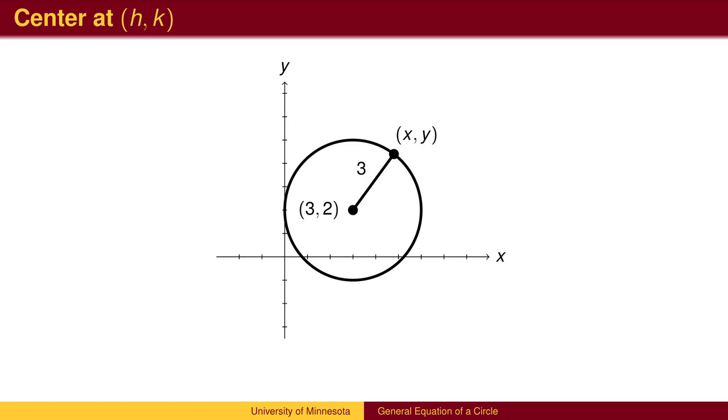You find the horizontal distance by subtracting x coordinates, and the vertical distance by subtracting y coordinates. The horizontal distance is x minus 3, and the vertical distance is y minus 2.